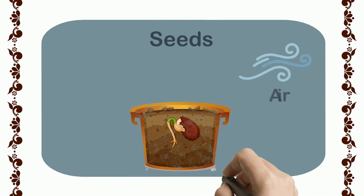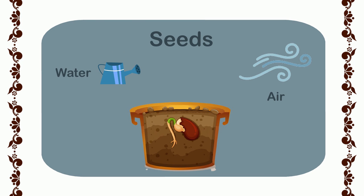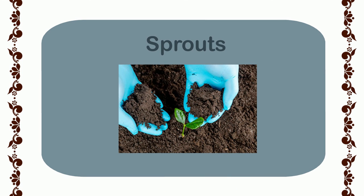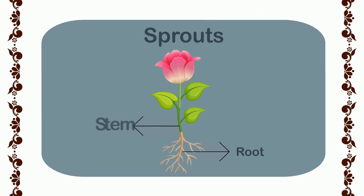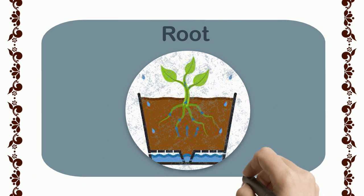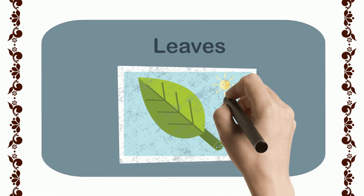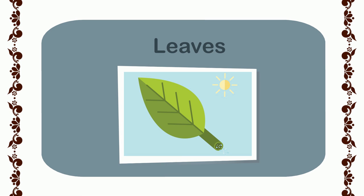When the seed gets air, water, and a warm place to grow, it sprouts — meaning it splits and the baby plant jets out of it. In the beginning, the baby plant gets food from the seed, but as it grows more, it develops roots, stem, and leaves. The roots are in the soil, which absorb water and minerals, and leaves absorb sunlight and air for the plant. The leaves then use them to make the plant's own food.